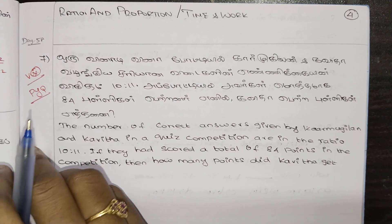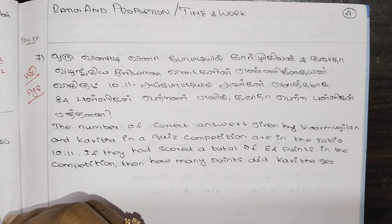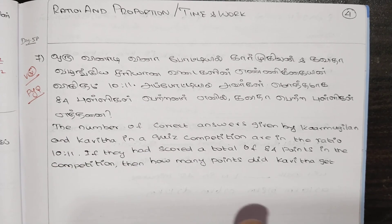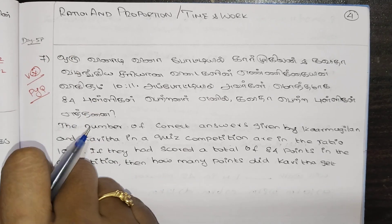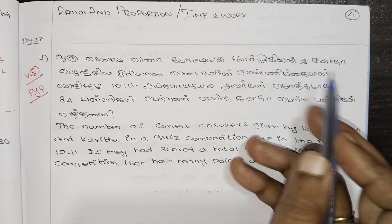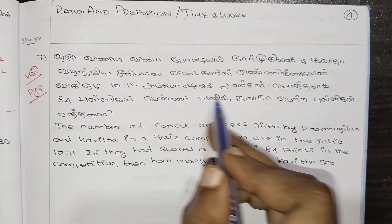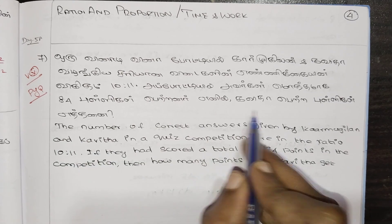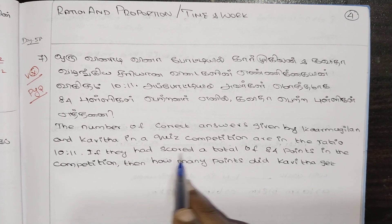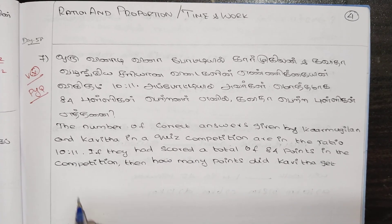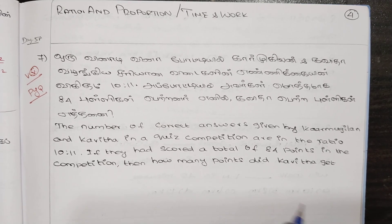Now we will talk about the first question — chapter 3, balance in the sixth term, section 3.4. The seventh question: the number of correct answers given by Karmuhilan and Kavitha in a quiz competition are in the ratio 10 is to 11. If they scored a total of 84 points, then how many points did Kavitha get?